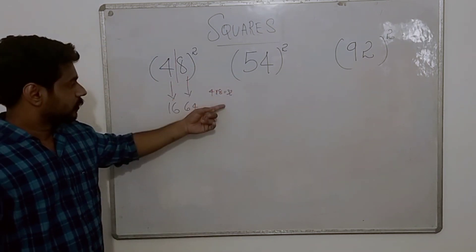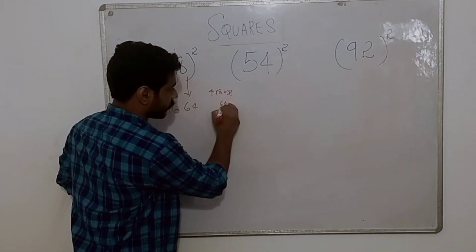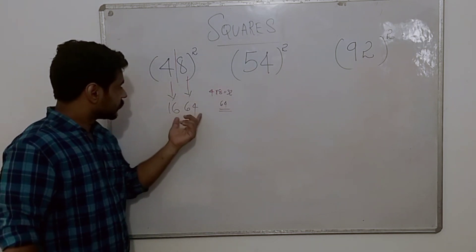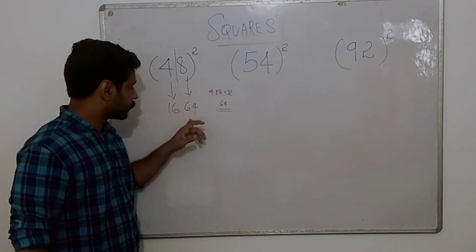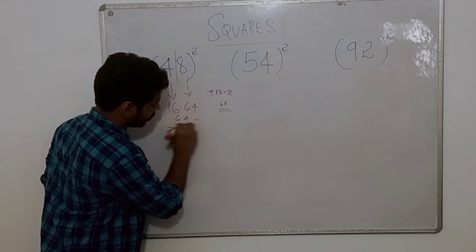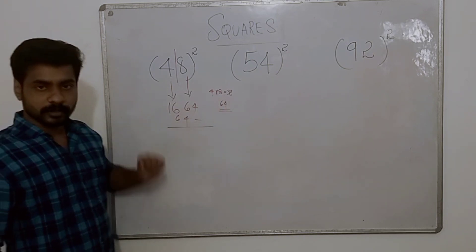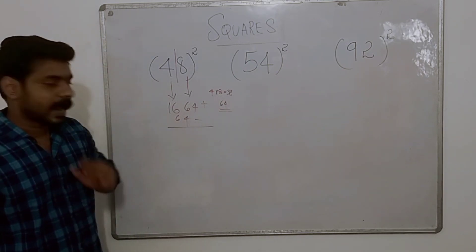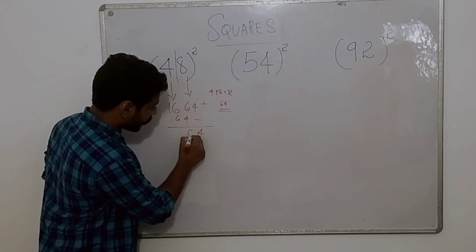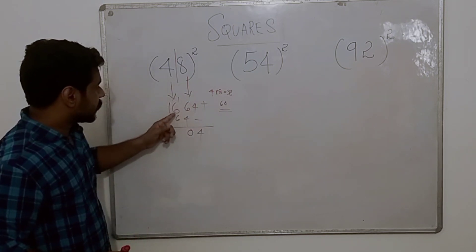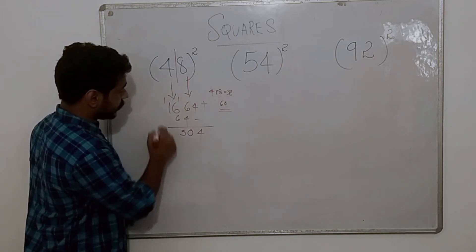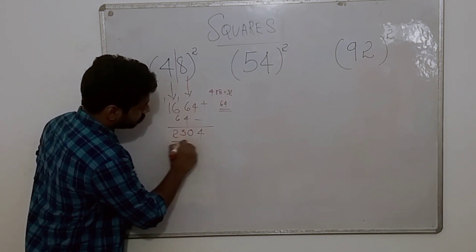We double the number: double of 32 is 64. We will add this 64. We have a unit base and we have 4. Once we have 64, we add: 4 plus 0, then 6 plus 4 we get 10, so we write 0 and 1 becomes carry. 6 plus 1 is 7, 7 plus 6 is 13, we write 3 and 1 becomes carry. 1 plus 1 we get 2. So the result is 2304.